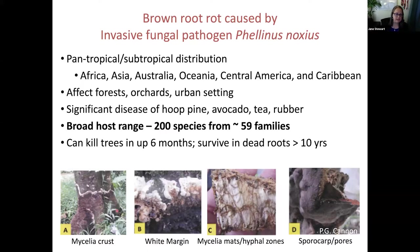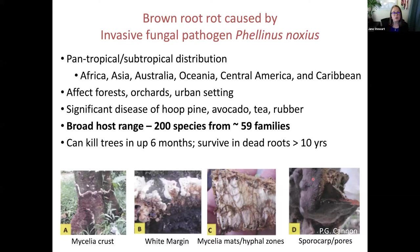Phellinus noxius has interesting life stages. There is a mycelial crust — it's a root pathogen that starts living on the lower stem of the tree. You then get fruiting bodies forming, including the white margin of the fruiting body and mycelial mats called hypozones where fungal tissue grows together as hyphae. There is also a sporocarp — essentially a conch-like structure — with a hymenial layer, which is the fruiting layer where spores are dispersed into the landscape.